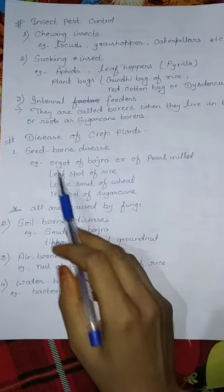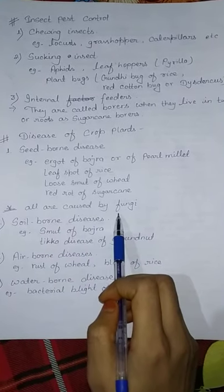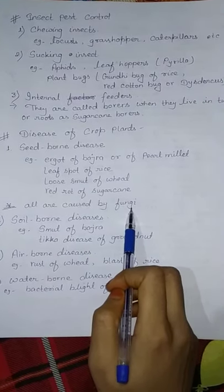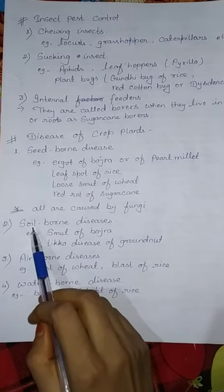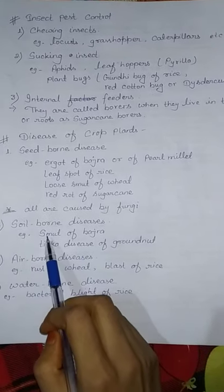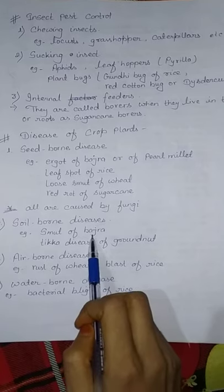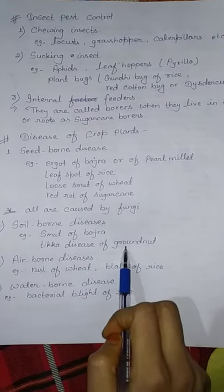Seed borne diseases are mostly caused by fungi. The second type is soil borne disease, which spreads through soil. Examples include smut of bajra and tikka disease of groundnut.